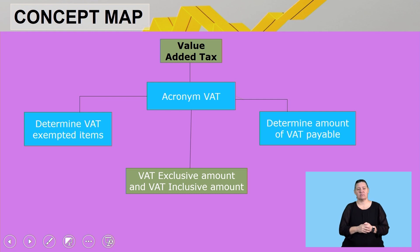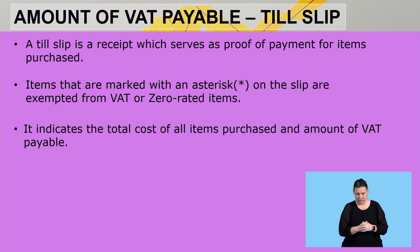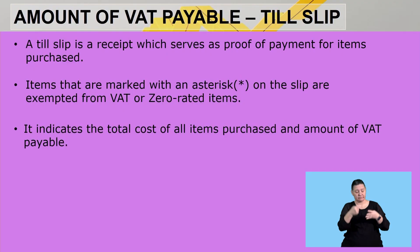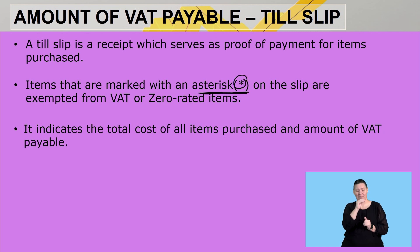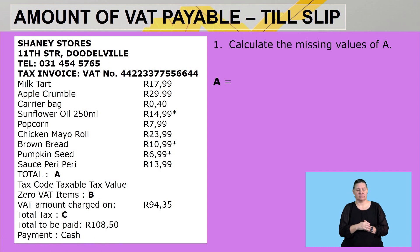Our second concept is to determine the amount of VAT payable. A till slip is a receipt which serves as proof of payment for items purchased — every time you purchase goods or pay for a service, you receive a receipt as proof of payment. Items marked with an asterisk on the slip are exempted from VAT or are zero-rated items. The till slip also indicates the total cost of all items purchased and the amount of VAT payable.